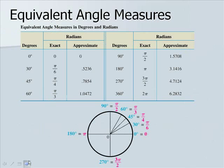Here we have a table with equivalent angle measures in degrees and radians, both exact and approximate. Notice that when doing your homework, if they ask for the exact answer, they want the form with π. If they want an approximate answer, they'll tell you how many decimal places to round to.